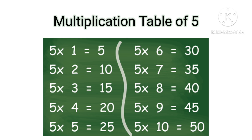Table of 5: 5×1=5, 5×2=10, 5×3=15, 5×4=20, 5×5=25, 5×6=30, 5×7=35, 5×8=40, 5×9=45, 5×10=50.